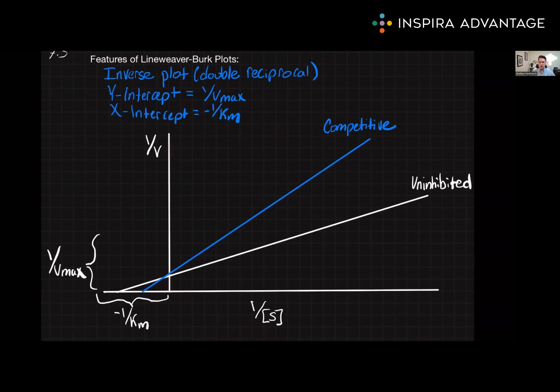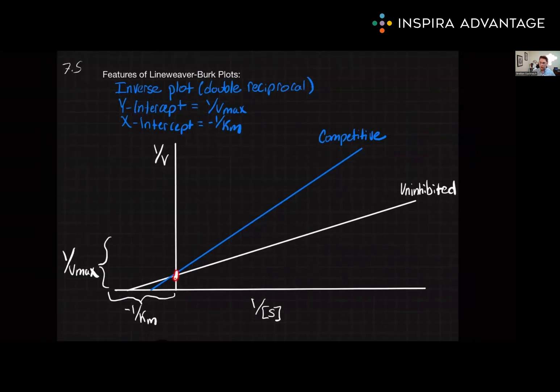To demonstrate this, look at the unlabeled line and the competitive inhibition line. Remember from our last video, in competitive inhibition, Vmax is unchanged and Km increases. So the y-intercept, which represents 1 over Vmax, will be the same for both lines. So we see an intersection here.